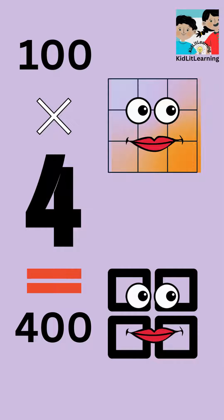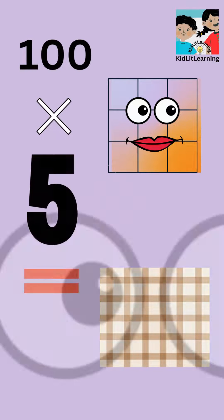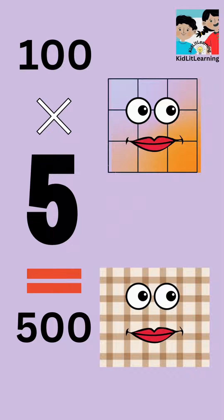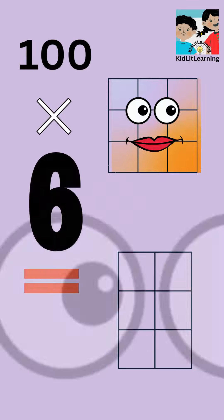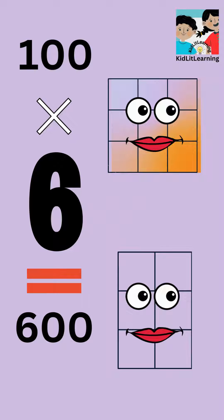100 times 4 is equals 400. 100 times 5 is equals 500. 100 times 6 is equals 600.